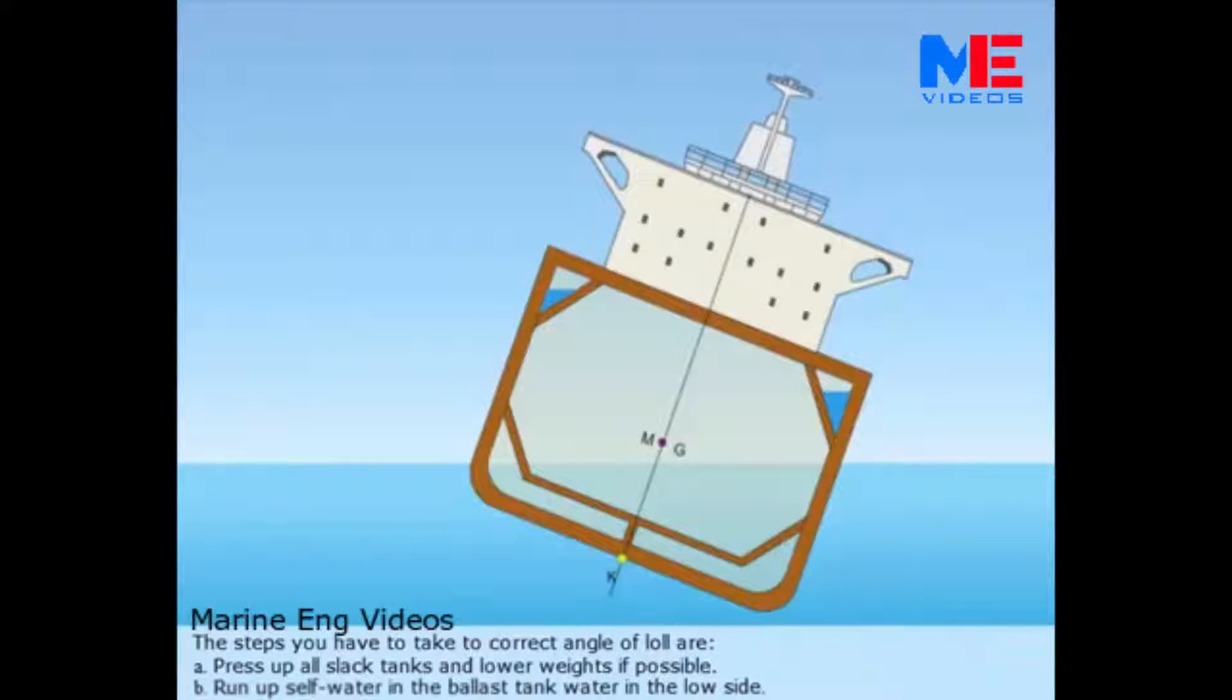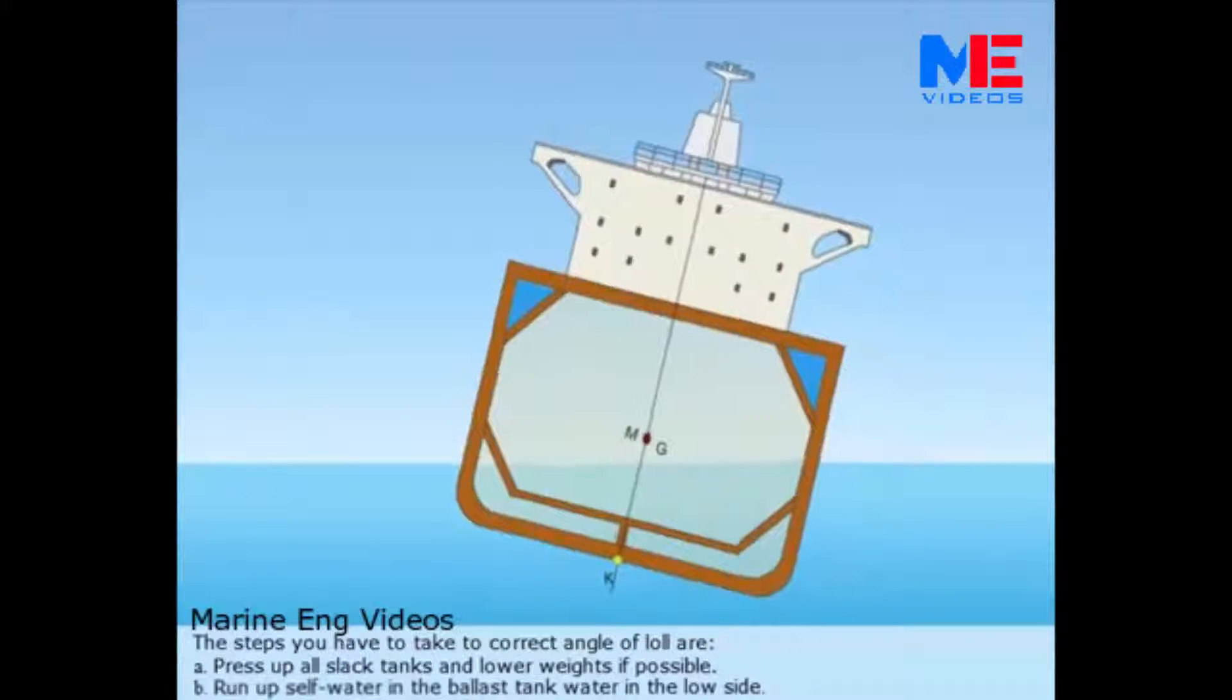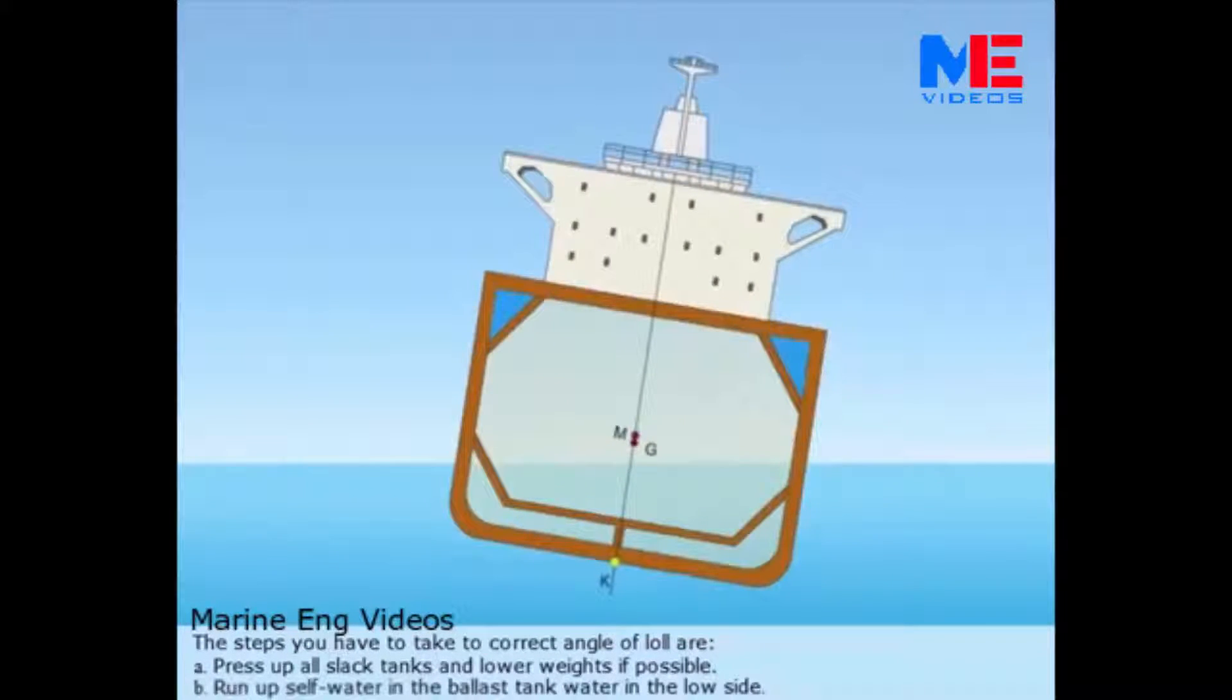The steps you have to take to correct angle of loll are: A. Press up all slack tanks and lower weights if possible. B. Run up saltwater in the ballast tank water on the low side.